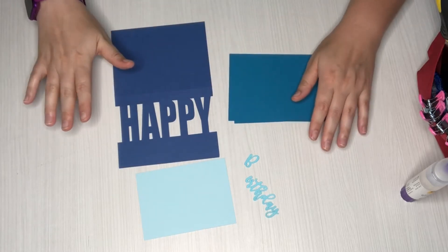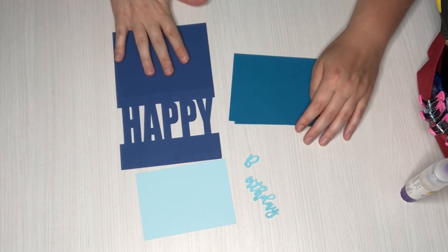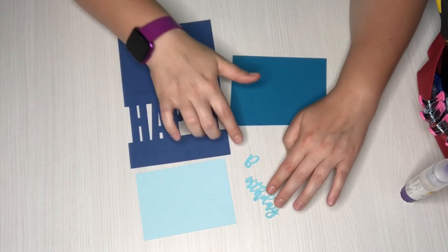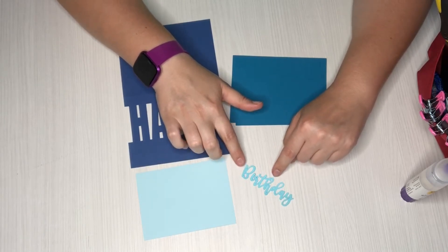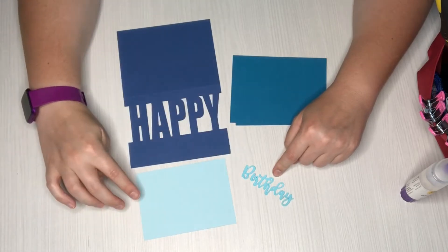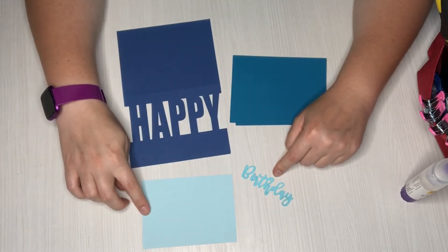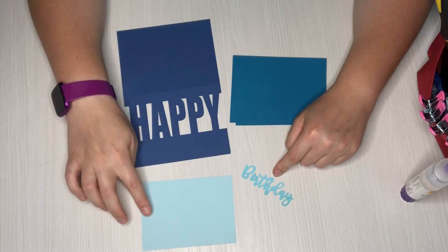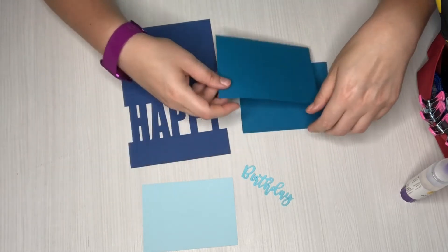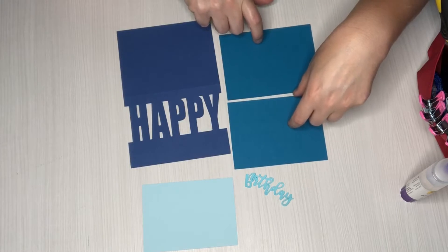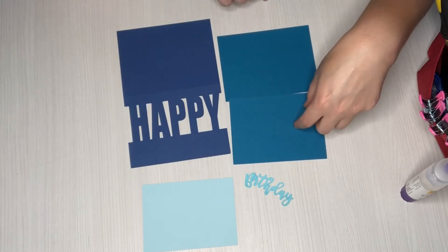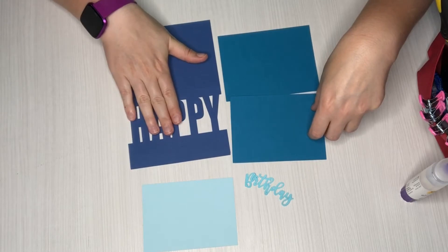So I've gone ahead and cut out all the pieces. You've got your base card here that says happy, and then you've got your word birthday. I went ahead and cut out three copies of this and glued it together. And then you've got your little sentiment piece here that you can write your message on, and then you've got two other rectangles. One will be layered on the inside, the smaller one, and then the large one here will go behind the word happy.